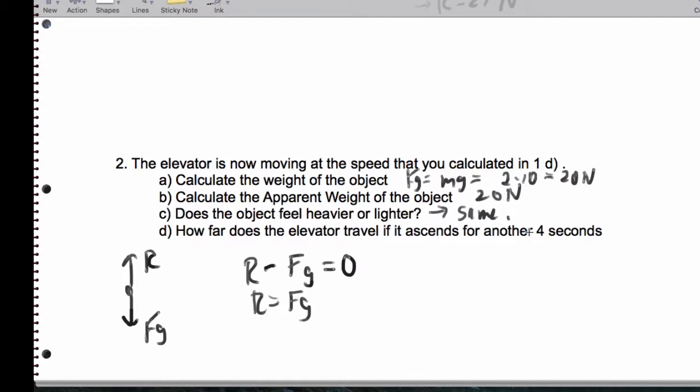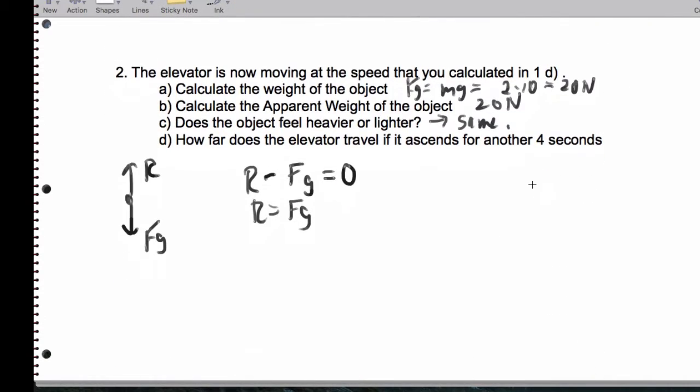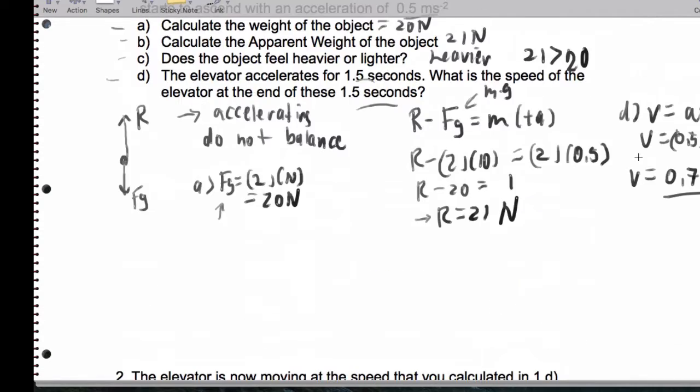How far does the elevator travel if it ascends for another 4 seconds traveling at this speed here? Well, now we can basically use the dirt formula. D equals R times T. That's going to be 0.75 times 4 seconds. We end up getting 3 meters worth of distance. This is maybe not the best elevator in the world.